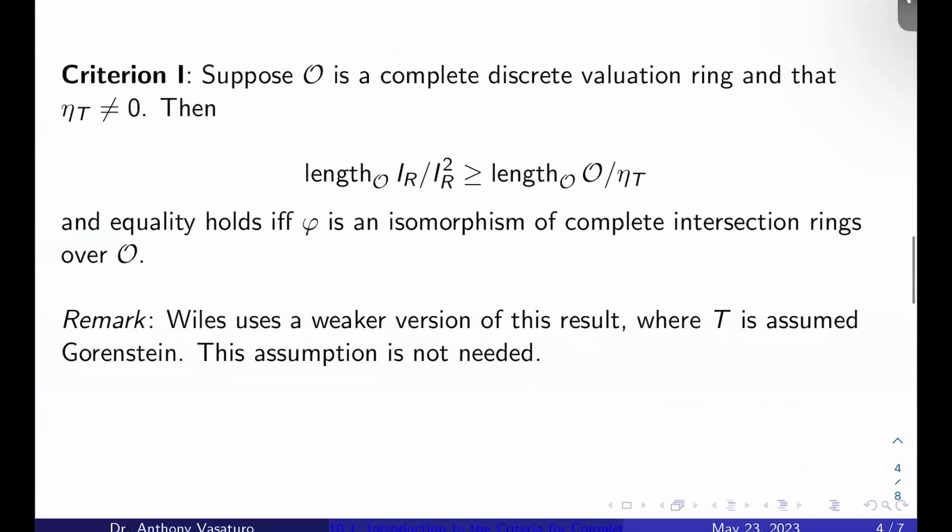So here's the first criterion. Today we're just going to go over what the criteria are. Criterion one: suppose O is a complete discrete valuation ring and that η_T isn't trivial. Then the O-length of I_R mod I_R squared is greater than or equal to the O-length of O mod η_T, as modules here. And the equality holds if and only if φ is an isomorphism of complete intersection rings over O.